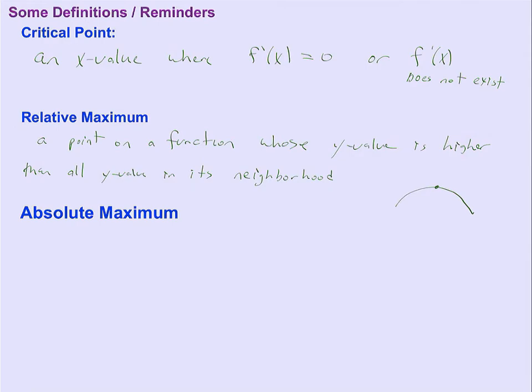But finding that relative max or relative min is what we're really going to focus on today. There are two ways to find a relative min or relative max. It's called the first derivative test and the second derivative test.